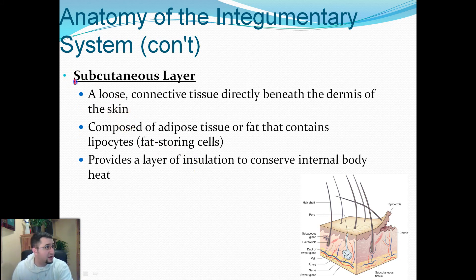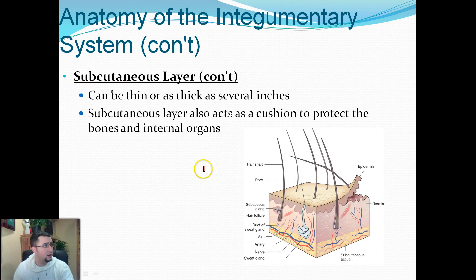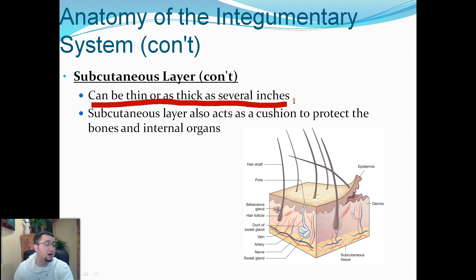Underneath the dermal layer is a layer called the subcutaneous layer, which we don't really classify as a true layer. It is a loose connective tissue that contains mostly adipose tissue, or fat, and provides a layer of insulation to conserve body heat. Parts of your skin are thicker than others because this subcutaneous layer, composed mostly of fat, can be really thick or really thin. It also acts as a cushion to protect the bones and internal organs.